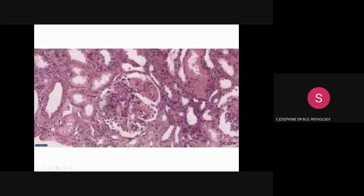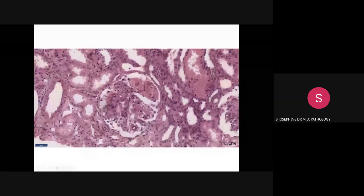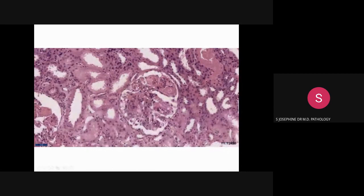This image shows fibrin thrombi inside the capillary lumen, with no glomerular wall attachment around these thrombi. Another image shows the formation of fibrin thrombi within the capillary lumen in the glomeruli. We can also identify karyorrhectic debris in this area, which is due to glomerular necrosis associated with apoptosis of infiltrating neutrophils.